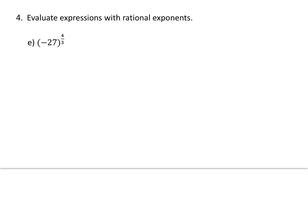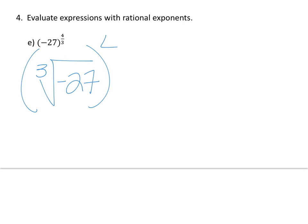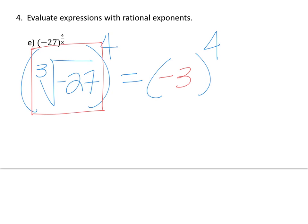Let's change this rational exponent into a radical expression. Remember that the denominator is your index number and the numerator is your exponent. So we have the third root of negative 27 raised to the fourth power. Working in the parentheses first, the third root of negative 27 is negative 3. Raising that to the fourth power gives us positive 81, because a negative base raised to an even exponent always gives a positive answer.